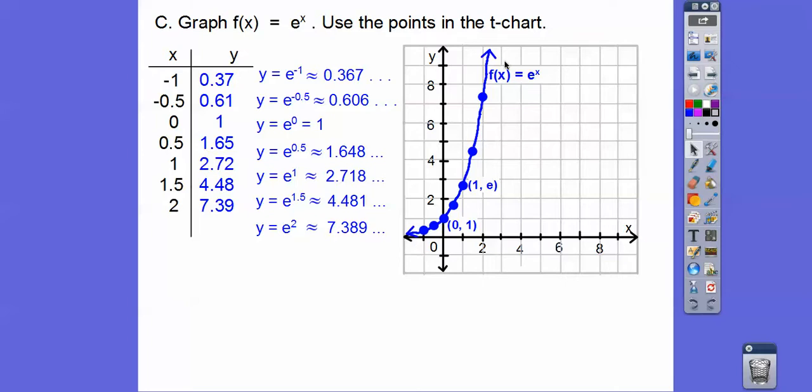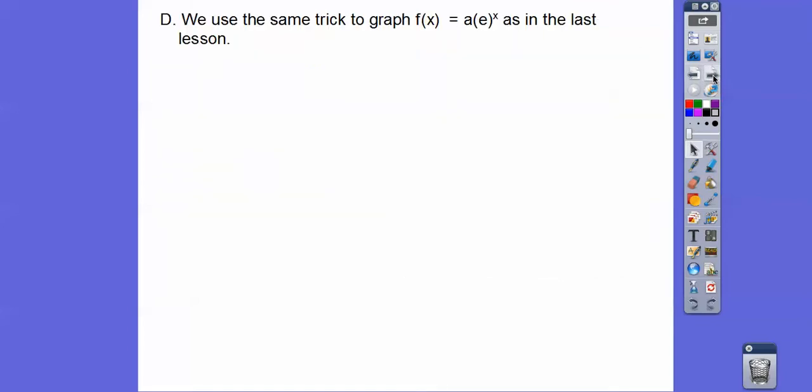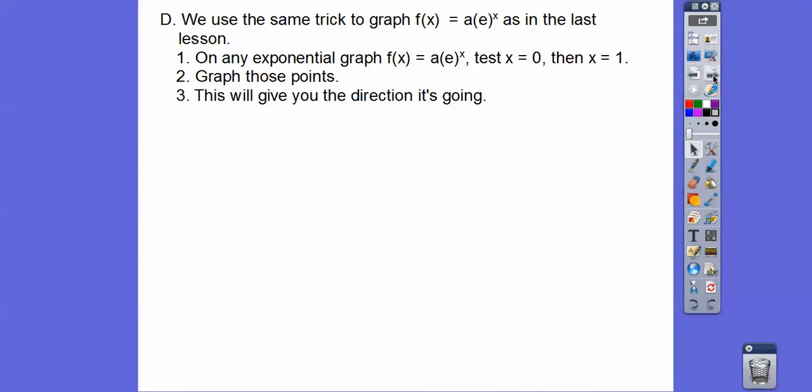Now, this is an exponential growth function because e is a number greater than 1. If it was a number less than 1, some decimal or fraction, but it's greater than 0, then it would be a decay function. That was yesterday's lesson. But they all graph the same. So we use the same trick to do in the last lesson. We just test 0, 1, and then graph those points, and that gives you the direction.